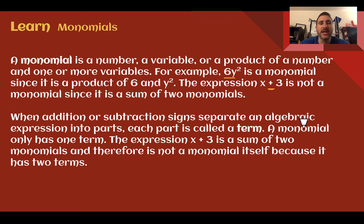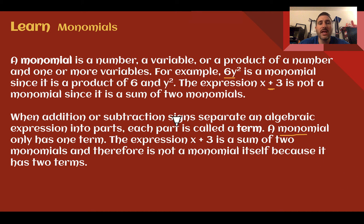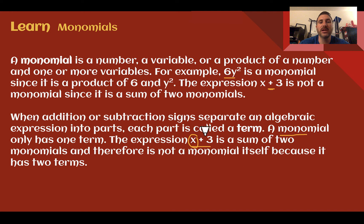So when addition or subtraction signs separate an expression into parts, they are called terms. A monomial only has one term, which is actually where the word comes from — mono meaning 1. The expression x plus 3 has two terms, so it is not a monomial. It has a term here and a term here. These both separately would be monomials, but together it is not a monomial.